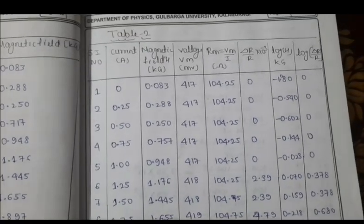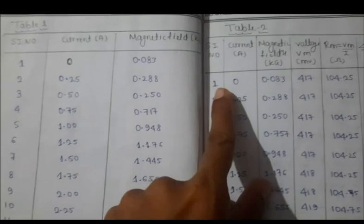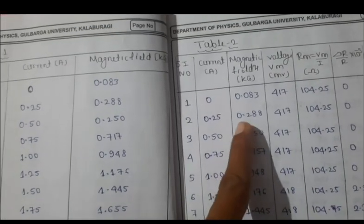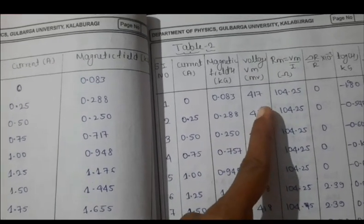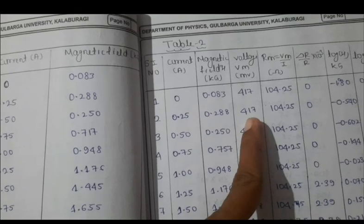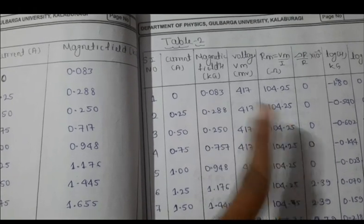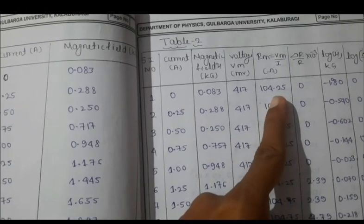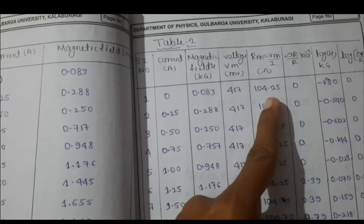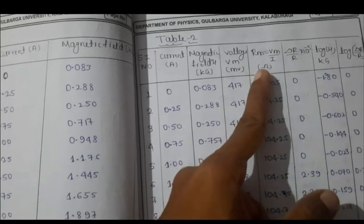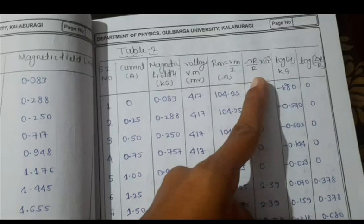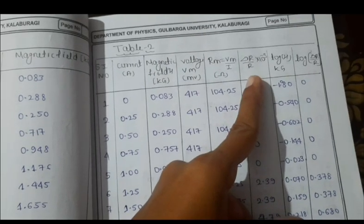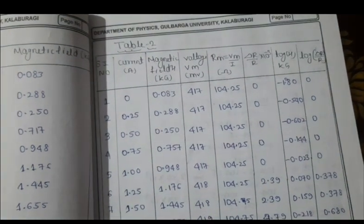In tabular column two, same as tabular column one - current and magnetic field we have to note, and the voltage we have to note. The corresponding resistance you can calculate using the ratio of voltage by current, that is magneto resistance. Take the ratio of change in resistance to R.